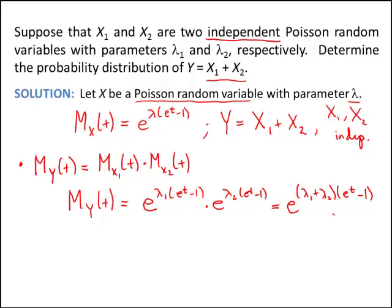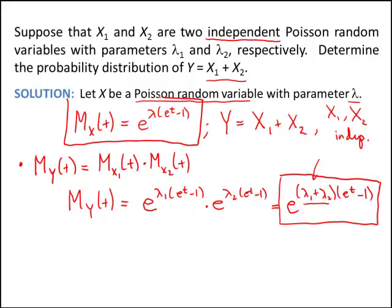If we stare at this result for a moment — let me box it up here — you might say, that's just the moment generating function of a Poisson, and given right here is the parameter of that Poisson. And in fact, you're correct. Here is the form that a Poisson random variable takes for its moment generating function: e to the lambda times e to the t minus 1, where lambda is the parameter. We've ended up with something of exactly the same form.